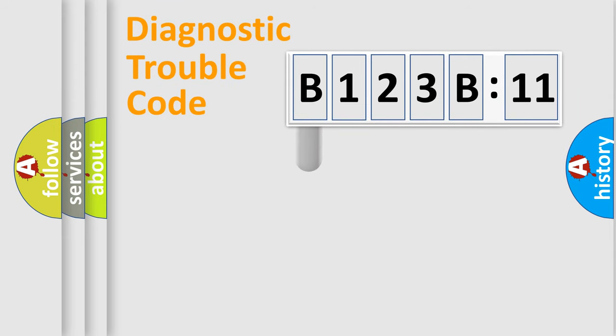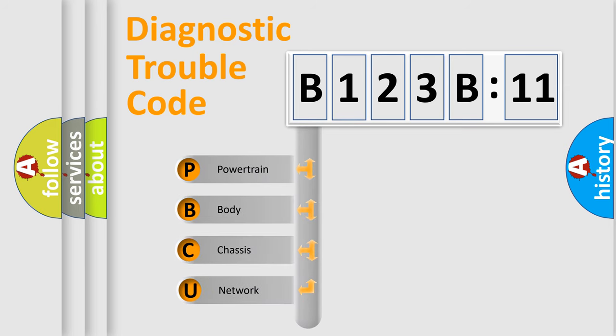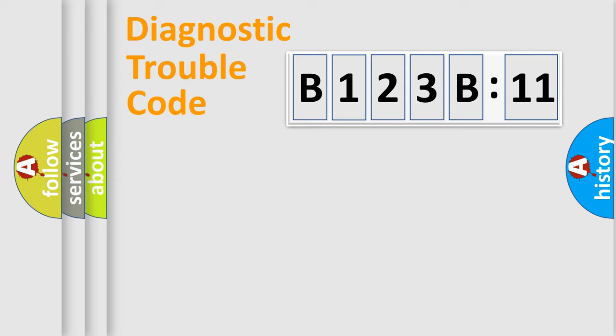First, let's look at the history of diagnostic fault code composition according to the OBD2 protocol, which is unified for all automakers since 2000. We divide the electric system of automobiles into four basic units: Powertrain, Body, Chassis, and Network.